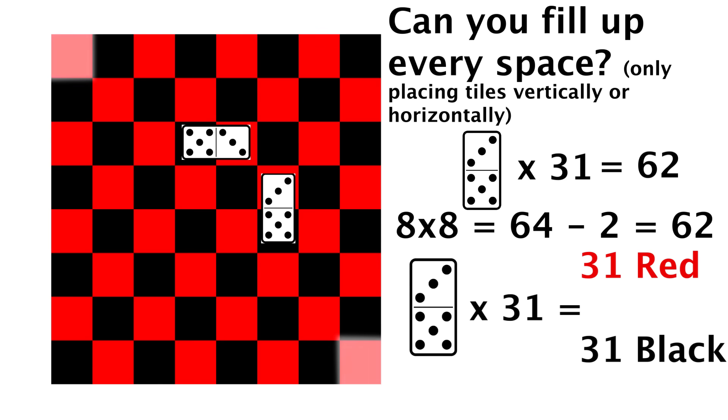Therefore 31 dominoes would have to cover 31 red spaces and 31 black spaces. If you notice, those missing end pieces are both red, which means there are 32 black squares and 30 red squares. Like we said, we would have to have 31 of each, and since we don't, there is no way to cover the entire checkerboard with these and our proof is done.